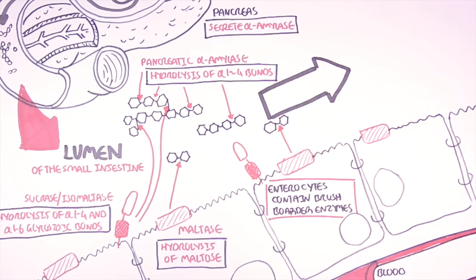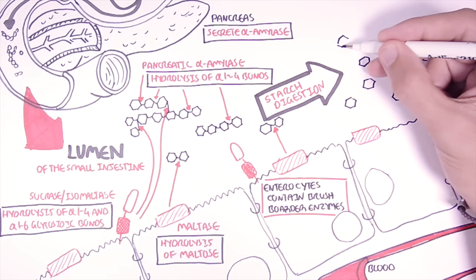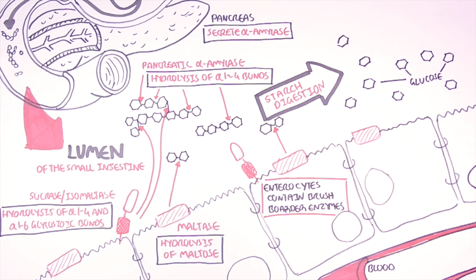Therefore starch will encounter all these enzymes in the small intestine and will be digested. It will be broken down into their building blocks which is glucose. So through starch digestion we will end up with many glucose molecules.